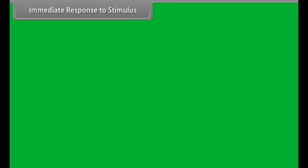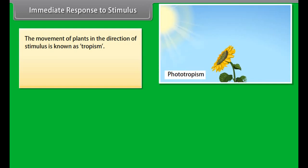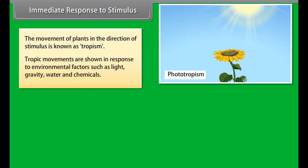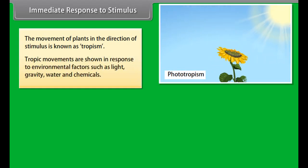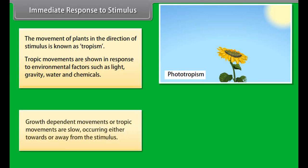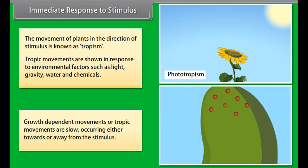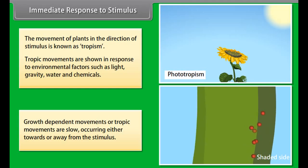The movement of plants in the direction of stimulus is known as tropism. Tropic movements are shown in response to environmental factors such as light, gravity, water, and chemicals. Growth dependent movements or tropic movements are slow, occurring either towards or away from the stimulus.